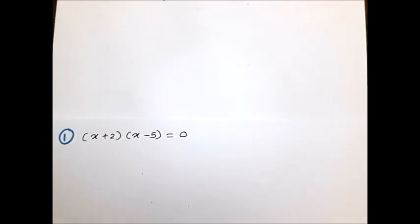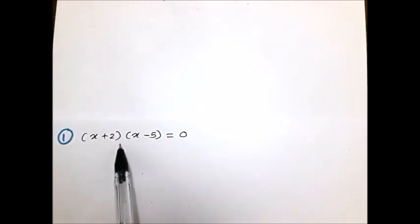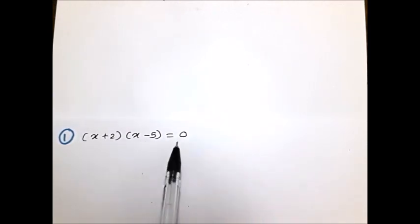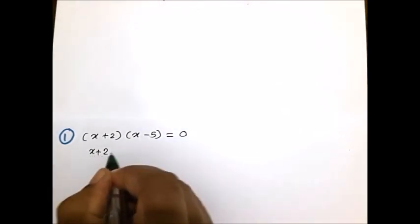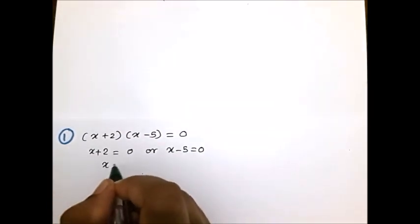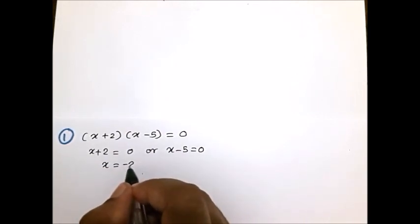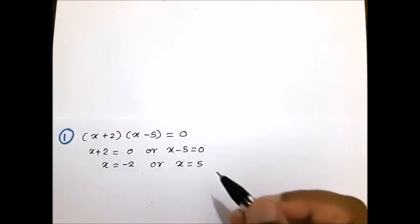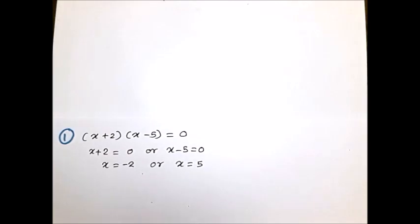Let's solve the first example. The operation between the two terms is multiplication, so at least one should equal 0. We write x + 2 = 0 or x - 5 = 0. Taking +2 to the right gives x = -2, and taking -5 to the right gives x = 5. The solution is x = -2 or x = 5.